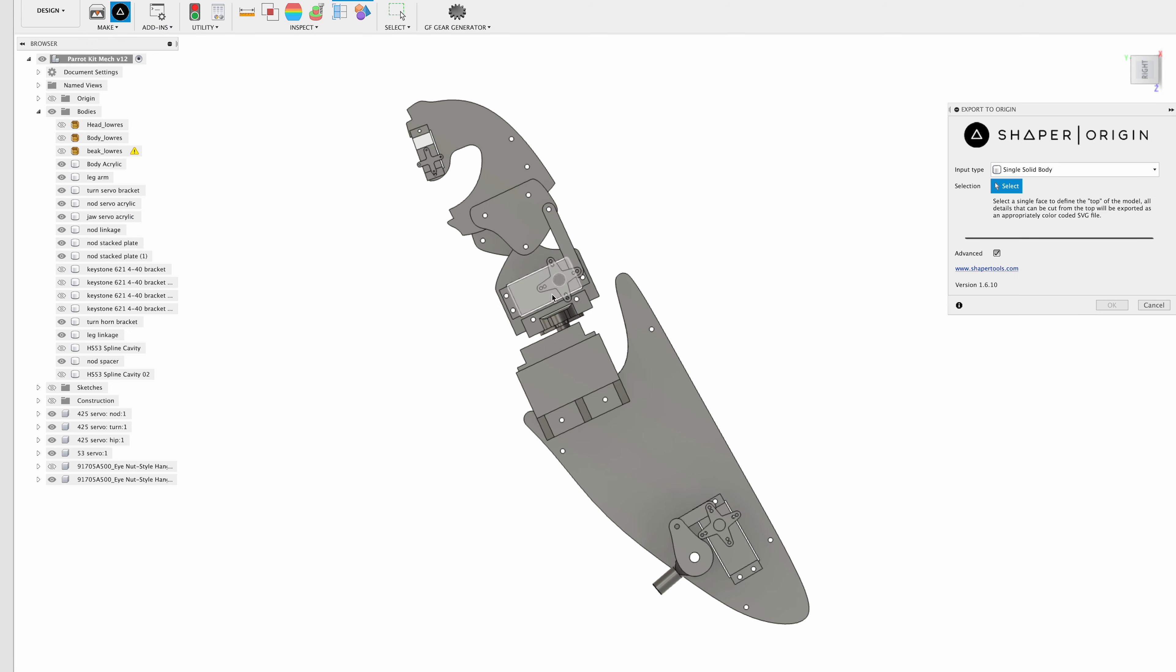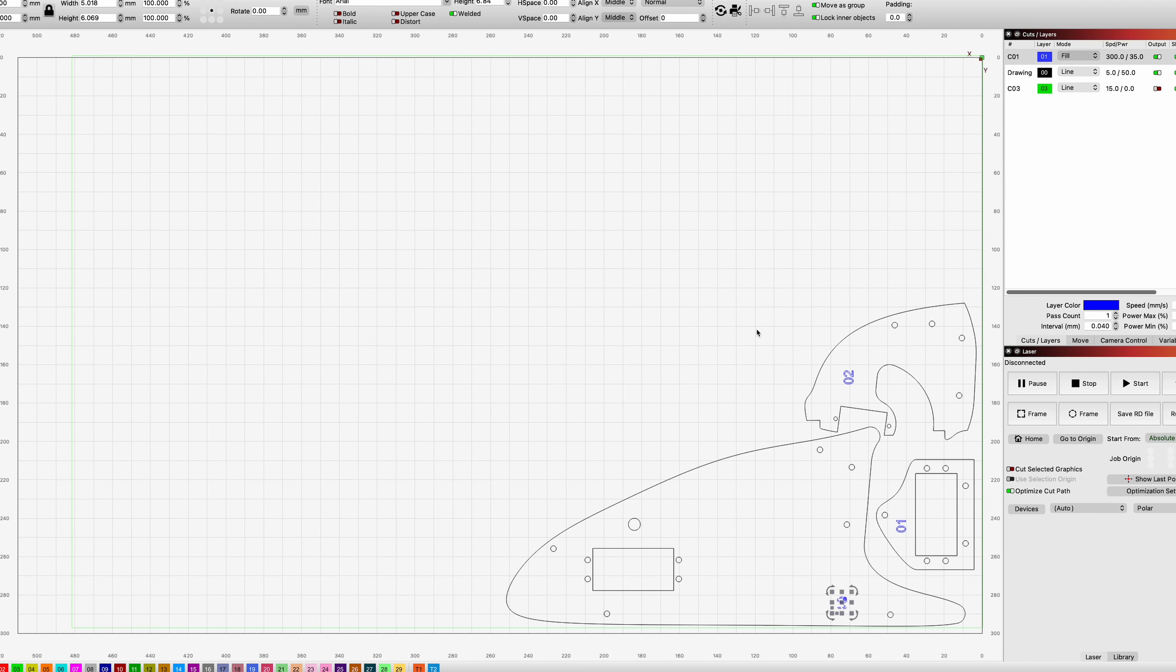So I exported those parts as vector drawings and brought them into Lightburn, which is the laser engraver software. This group is all the quarter inch thick parts. I've grouped all the cut lines for each part and put them into one layer, and then added numbers as engravings on another layer so that I can keep track of which version of the prototype is which. These are mostly version 1 and then one version 2 piece there.